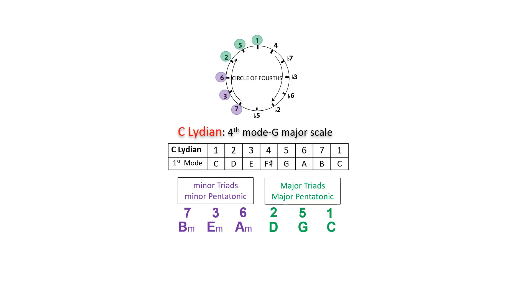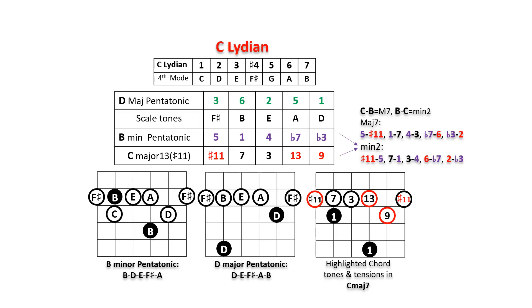You can use the C Lydian scale, which is also a major mode like the C Ionian, to derive the B minor and D major pentatonic scales, which can be superimposed over C major 7. These scales contain sharp 4, the characteristic note in Lydian. The interval between roots C and B can be seen as an ascending major seventh or descending minor second. The highlighted notes — sharp 11, 7, 3, 13, 9 — can be found a minor second below the B minor pentatonic scale degrees ordered in fourths. If you've heard it said, play a minor pentatonic scale a half step below the root of the chord to imply the Lydian mode, it should now make perfect sense.